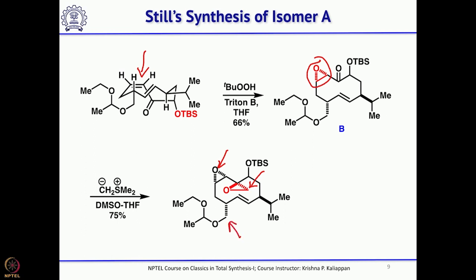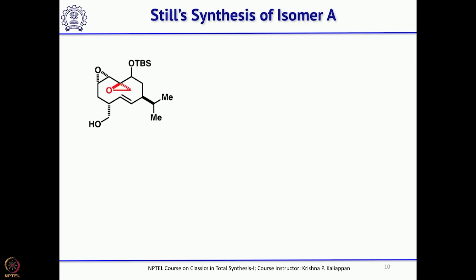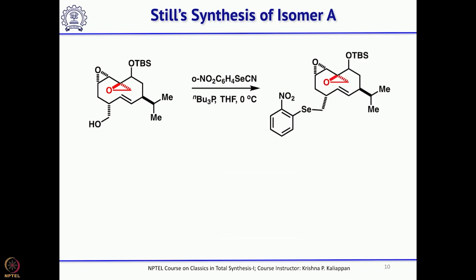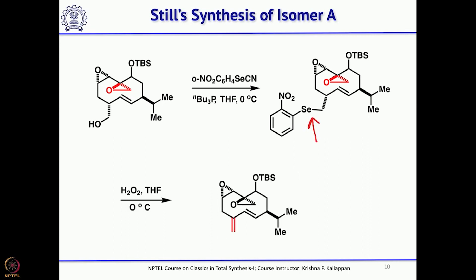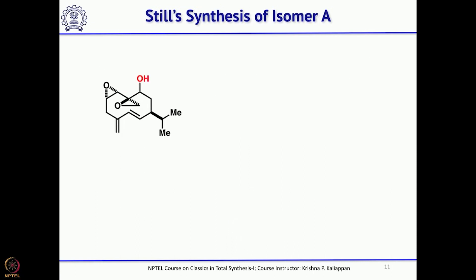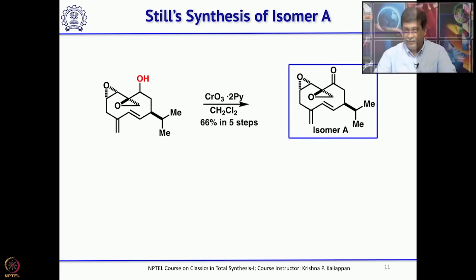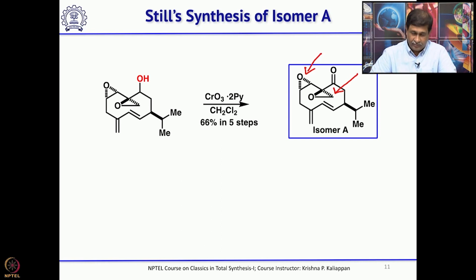To introduce the exocyclic double bond, the ethoxyethyl protecting group was removed with acetic acid/water to give the primary alcohol. Treatment with ortho-nitrophenylselenocyanide gave the phenylselenide intermediate. Upon treatment with hydrogen peroxide or MCPBA, the corresponding selenoxide forms and undergoes elimination to introduce the double bond. Removal of the TBS group released the secondary alcohol, which upon oxidation gave the ketone. However, none of the spectral data matched Periplanone B, because both epoxides had opposite stereochemistry to the natural product.